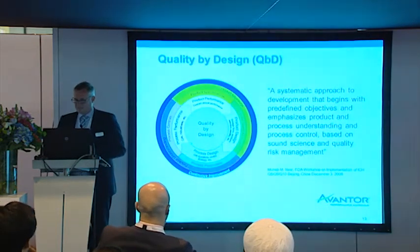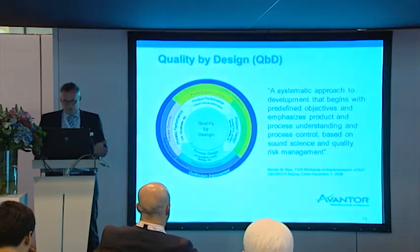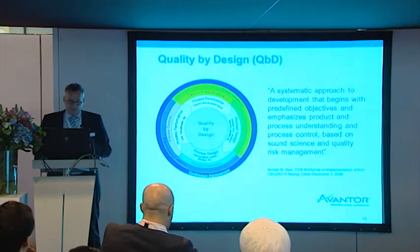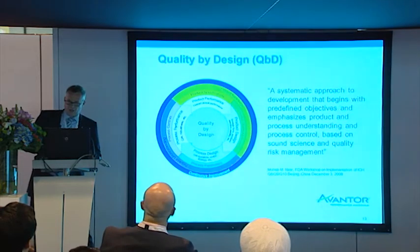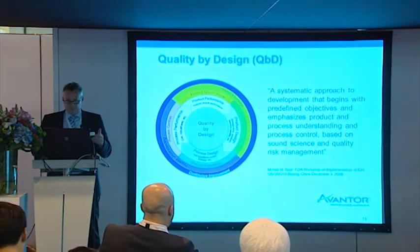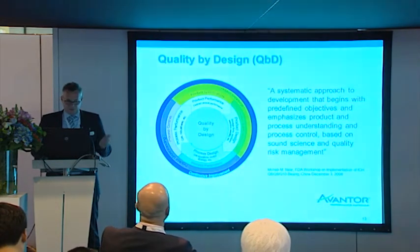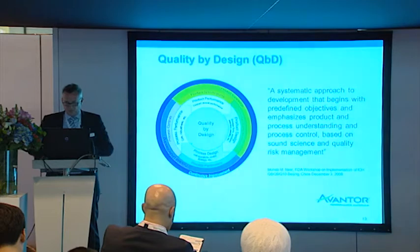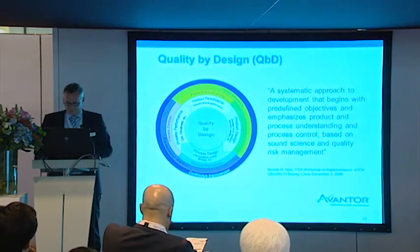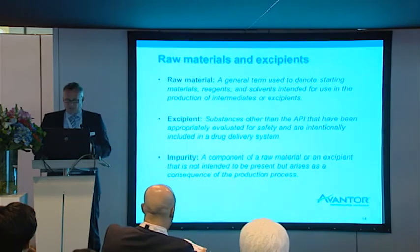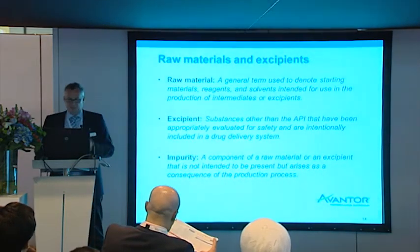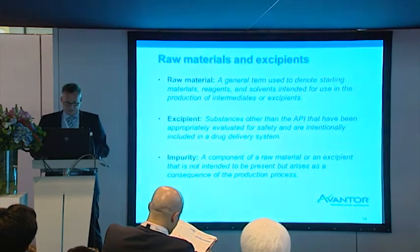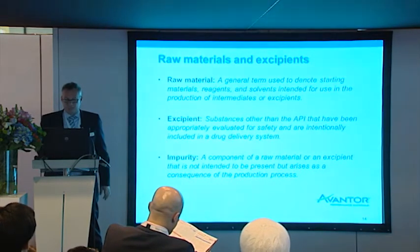Quality by design — you hear a lot about it. In a nutshell, quality by design is used to control your process and to understand what is affected in your process. That means you have to identify your critical quality attributes, and furthermore you have to understand your design space in which you work in order to control it. We have to look at the raw materials, at the excipients, and also the impurities — all well defined in ICH Q7.